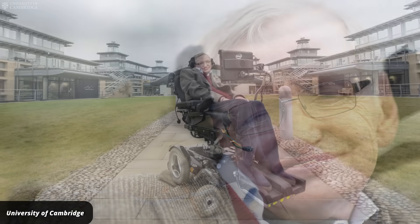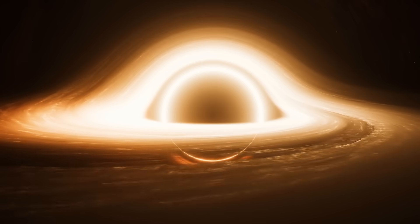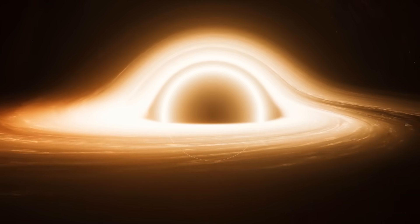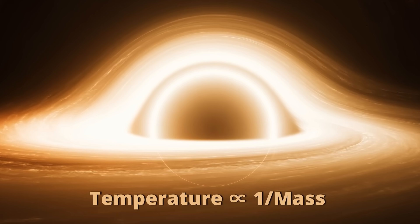Stephen Hawking predicted in the 1970s that black holes emit radiation, now called Hawking radiation. This radiation causes a black hole to lose mass and eventually evaporate completely. Unfortunately, the temperature of the radiation is inversely proportional to the black hole's mass. So the larger the black hole, the less radiation.